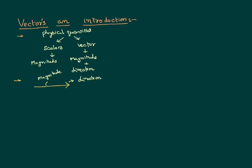There is one basic term you need to know to continue the discussion further: the unit vector. The name itself tells you — its magnitude, its size, is only one unit. And it has a specific direction. So a unit vector is a vector whose magnitude is one and which has a specific direction.